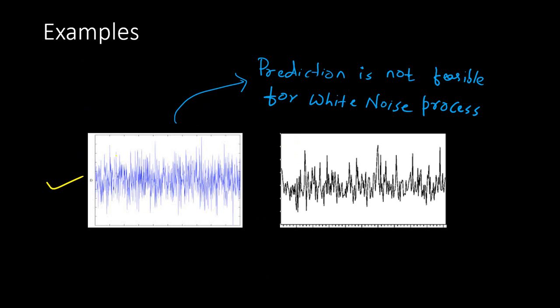This is how a white noise process looks like — it is totally random. You can see there is no pattern in the data, so there is no point in fitting a time series model because the values are totally unpredictable. Prediction is not feasible for a white noise process. The moment you find that the time series data is white noise, stop there and do not go ahead with any prediction or model fitting.